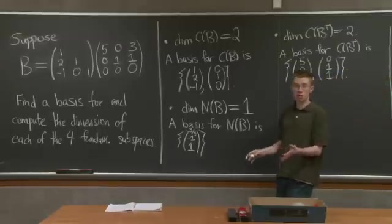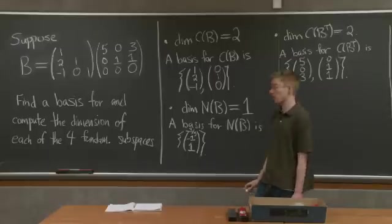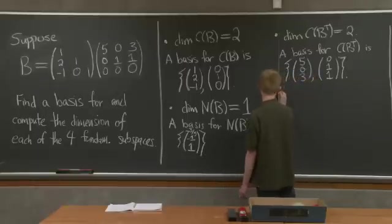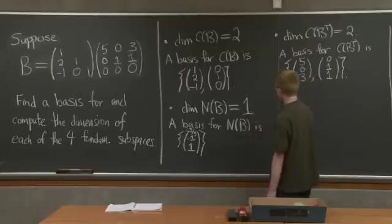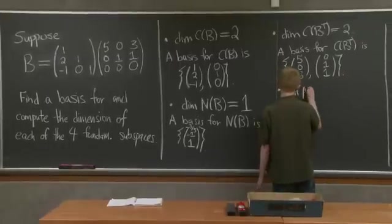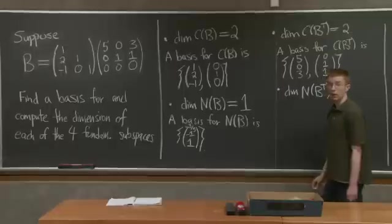OK. The last one is always the toughest and the trickiest. We have to do the left null space or the null space of B transpose. OK, so first let's compute its dimension. What's the dimension of this left null space?